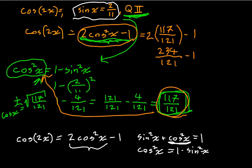What is that 1 going to be? That's the same as 121 over 121. We can do that just so that we can simplify these fractions. We take 121 from 234. That's going to be 113. Over 121 is going to be the cosine of 2x.